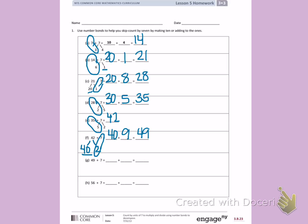Letter G. I'm going to decompose 7 into 1 and 6. 49 plus 1 is 50, plus 6 more is 56.